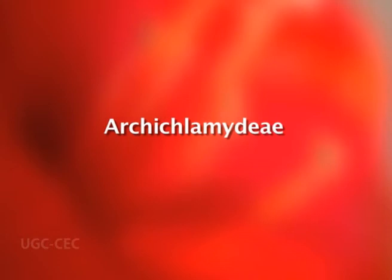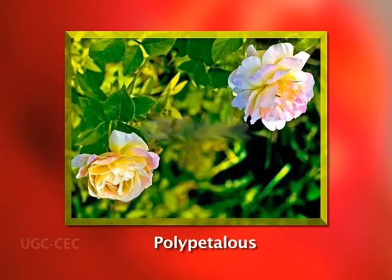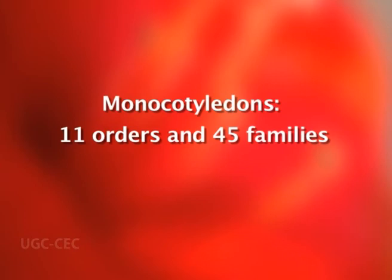The Engler and Prantl system dominates over all previous natural systems of classification, though it is certainly based on those systems. It is based on the increasing complexity of plant parts, particularly the essential whorls of flowers. The gamopetalous condition is considered more advanced than the polypetalous condition, with an indefinite number of stamens and carpels.